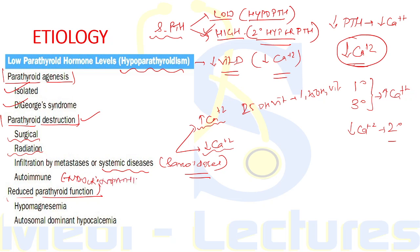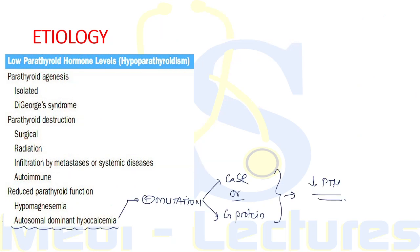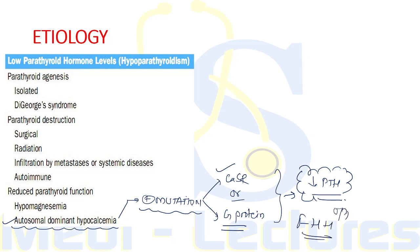Reduced parathyroid function is usually seen with hypomagnesemia — therefore magnesium levels are very important in the diagnostic approach. Another condition is autosomal dominant hypocalcemia, where there is an activating mutation in the CASR gene (calcium sensing receptor) or the G protein that mediates CASR signaling. Due to this activating mutation, parathyroid glands are suppressed even in the absence of calcium, leading to decreased PTH release. This is essentially opposite to familial hypocalciuric hypercalcemia (FHH).